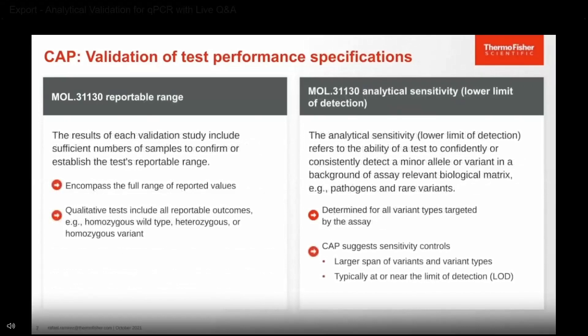In terms of reportable range, each validation study must include sufficient numbers of samples to confirm or establish the test reportable range. It's important to encompass the full range of reported values. In terms of pharmacogenetic studies, you need to make sure you cover all the potential reportable outcomes, such as homozygous wild type, heterozygous, or homozygous variant for all assays on your panel.